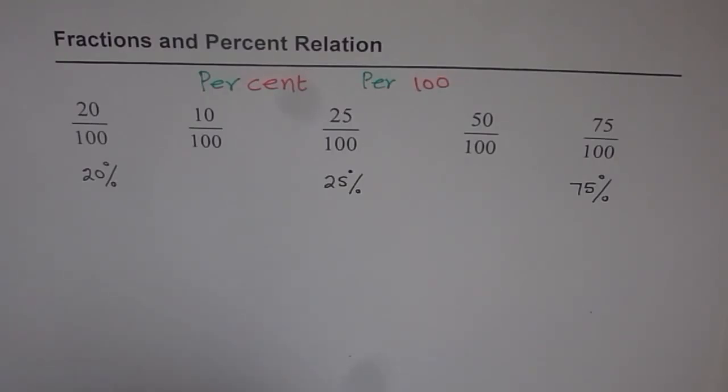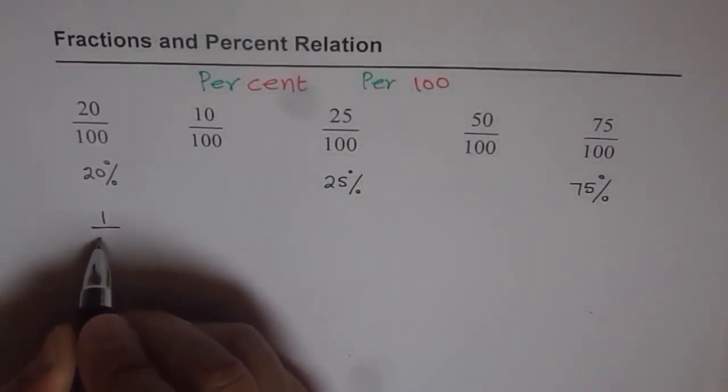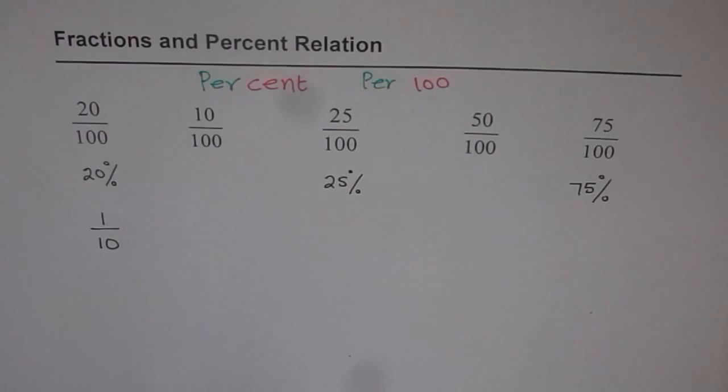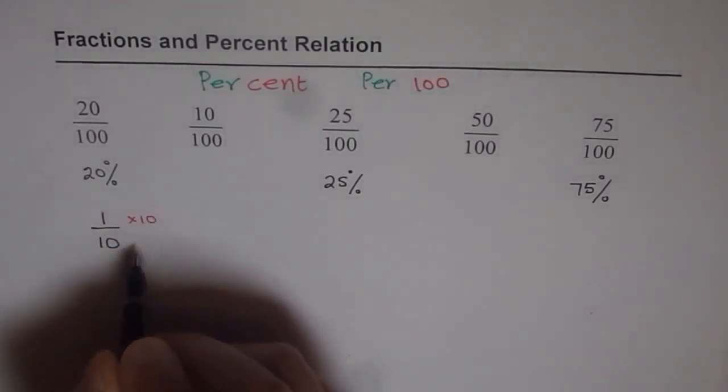On the other hand, if I write a number, let's say 1 over 10, then can you convert that into percent? The trick is that you need to multiply the denominator by a number so that it could be 100. So let us multiply both by 10.